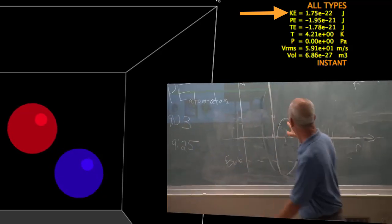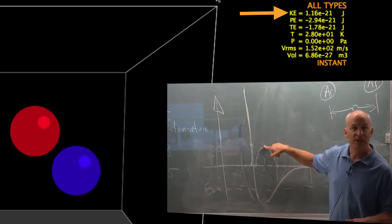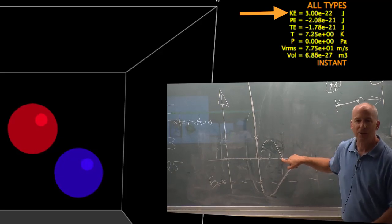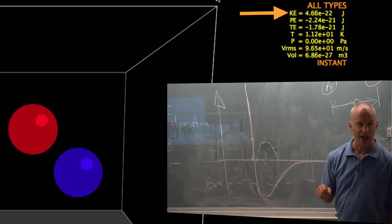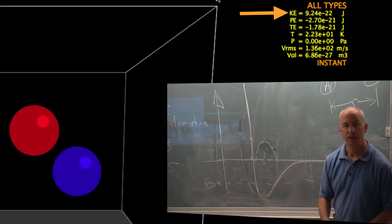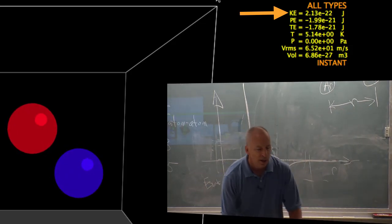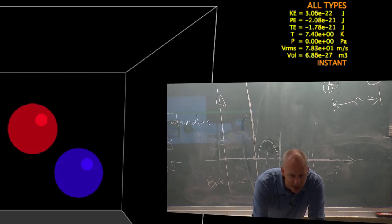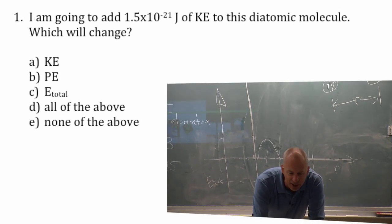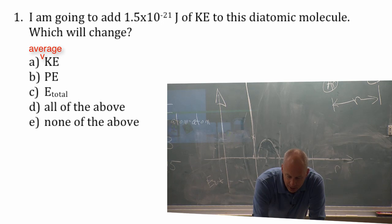So the kinetic energy goes as high as around 1 times 10 to the minus 21, and then it drops down to zero. And so the kinetic energy is going up and down as it oscillates, and the potential energy is going up and down. So asking about kinetic energy is not the best plan. I'm going to ask you about average kinetic energy.